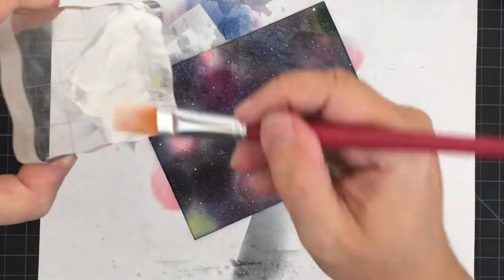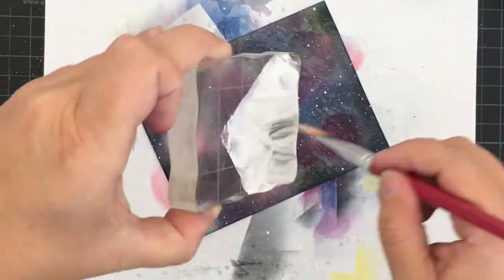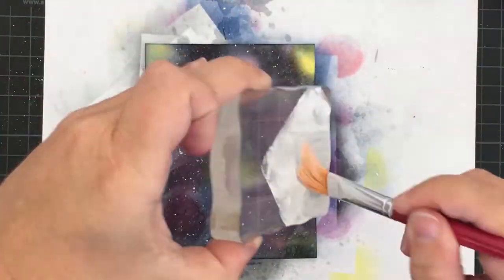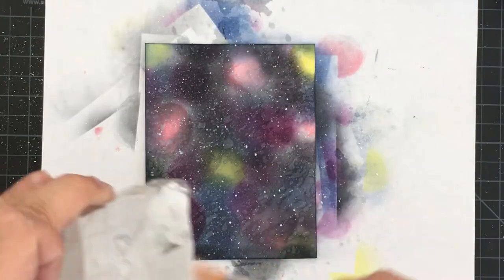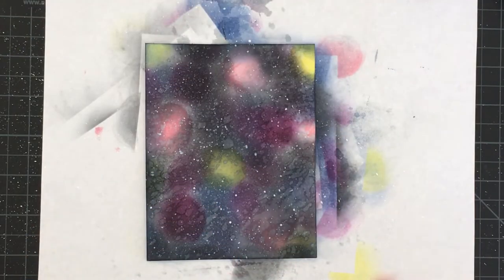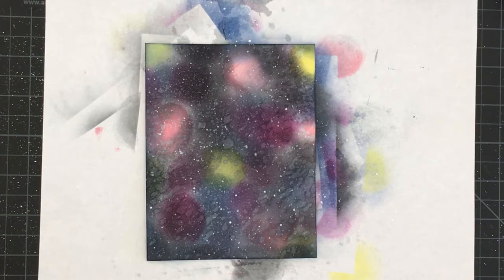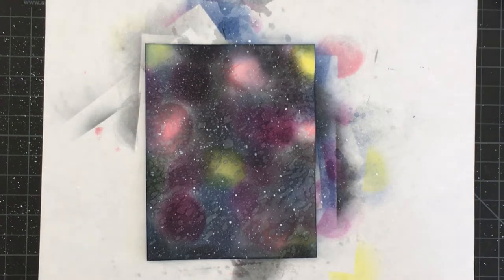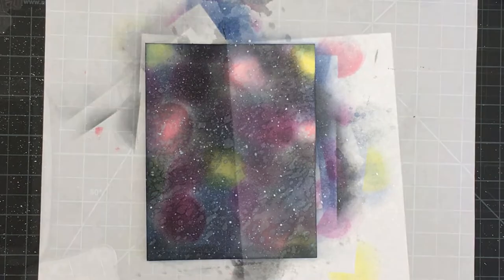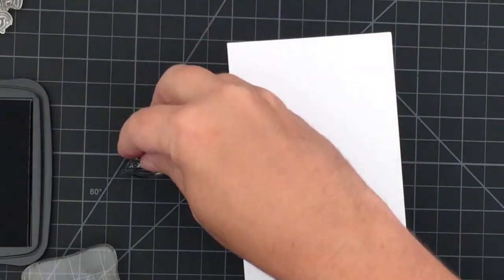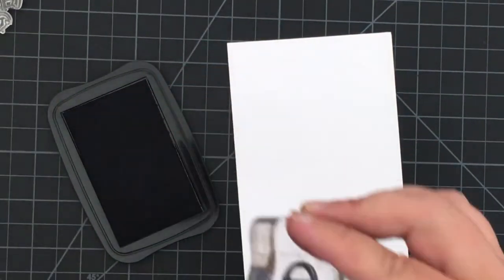Now I need to add some stars. I am using some Hero Arts White Pigment ink mixed with a little water. As you can tell, because it is mixed with water that does mix with the Distress ink and so it is a little light. On the last card that I did, I switched over to some acrylic paint and added a little bit of water and I really like that look a lot better.